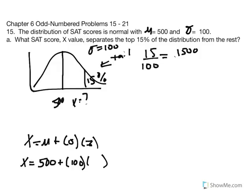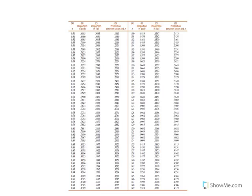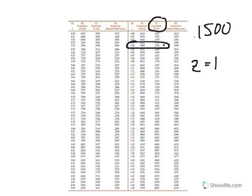We report what Z is equal to using our unit normal table. We enter the table using column C, the tail, looking for the closest proportion to 0.1500. The closest value we find corresponds to a Z score of 1.04.